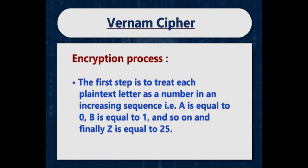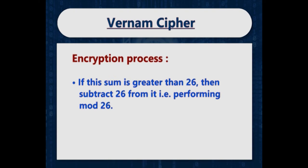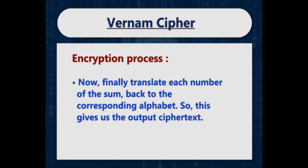Let us discuss the encryption process for the Vernam cipher. The first step is to treat each plaintext letter as a number in increasing sequence: A=0, B=1, and so on up to Z=25. Next, add each number corresponding to the plaintext letter to the corresponding one-time pad alphabet number. If this sum is greater than 26, subtract 26 from it — that is, perform mod 26. Finally, translate each resulting number back to the corresponding alphabet to get the ciphertext.